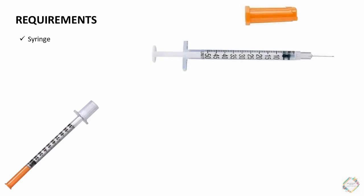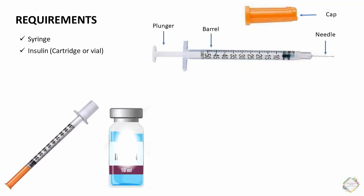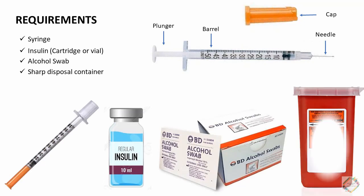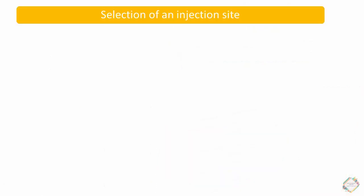The basic requirements for insulin administration include the syringe, which has four parts: the plunger, the barrel where insulin is loaded, the cap, and once the cap is removed, the needle. We also need the insulin, which can be in a cartridge or vial, an alcohol swab, and a sharp disposal container where we dispose of used syringes.